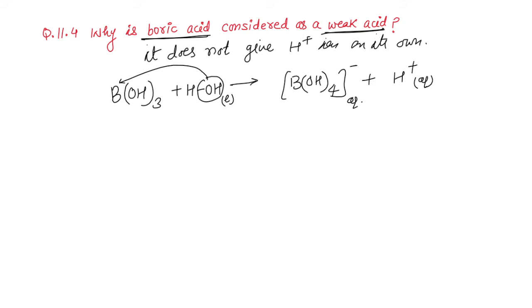Actually, boric acid, though it is an acid, but it does not give H+ ion on its own. Rather, it accepts OH- ion from water and which in turn releases H+ ion. So actually, H3BO3 or we can say B(OH)3 is a Lewis acid. Because it accepts OH- ion.